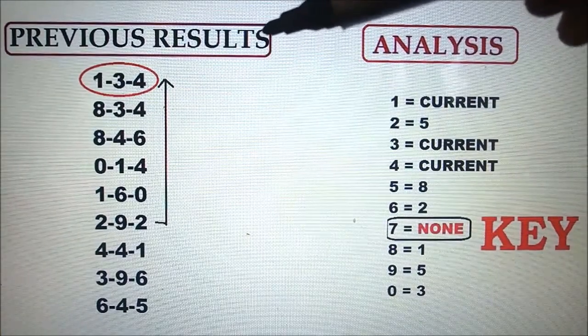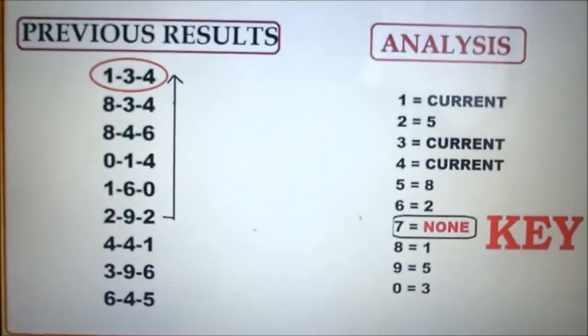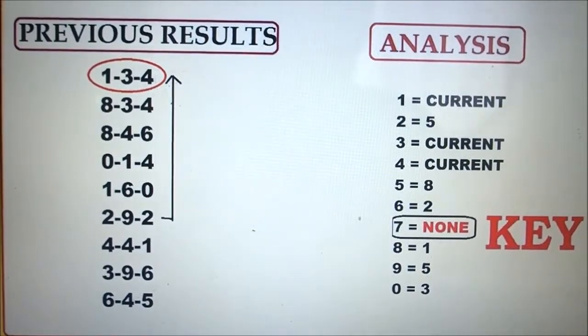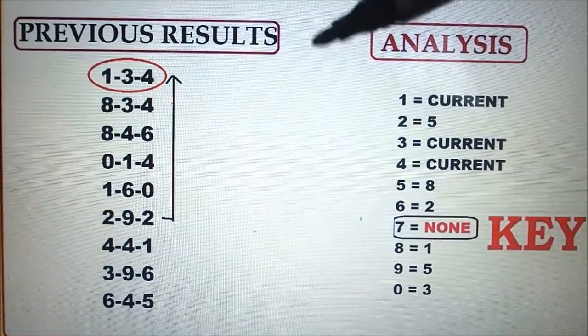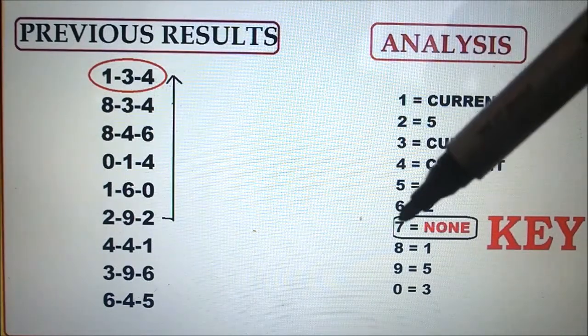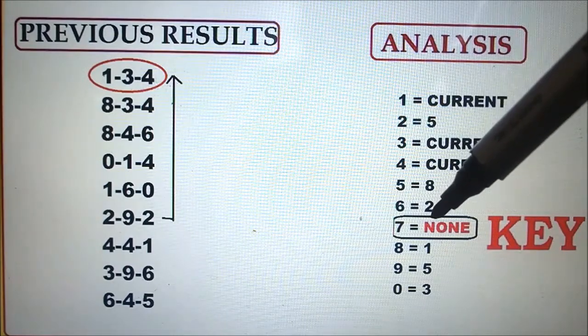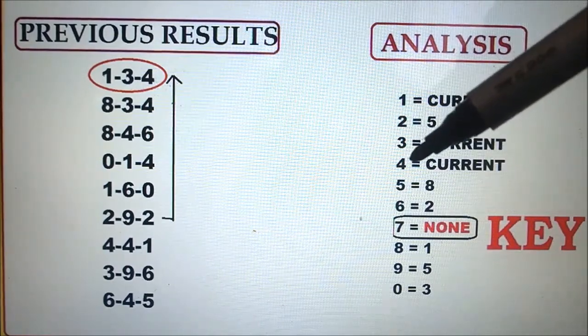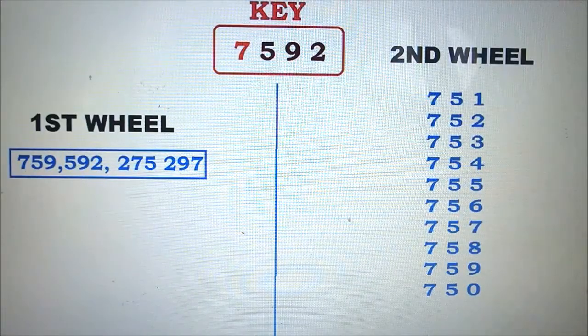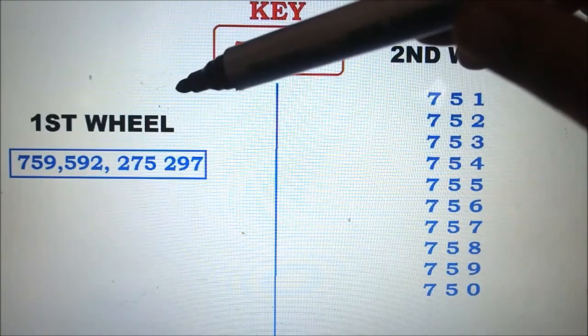Okay, hope my explanation on the skip strategy is very clear. Now we will generate the combination using the key numbers, using the primary key numbers and the secondary key numbers. The primary key number is 7. The secondary is 5, 9, 2.